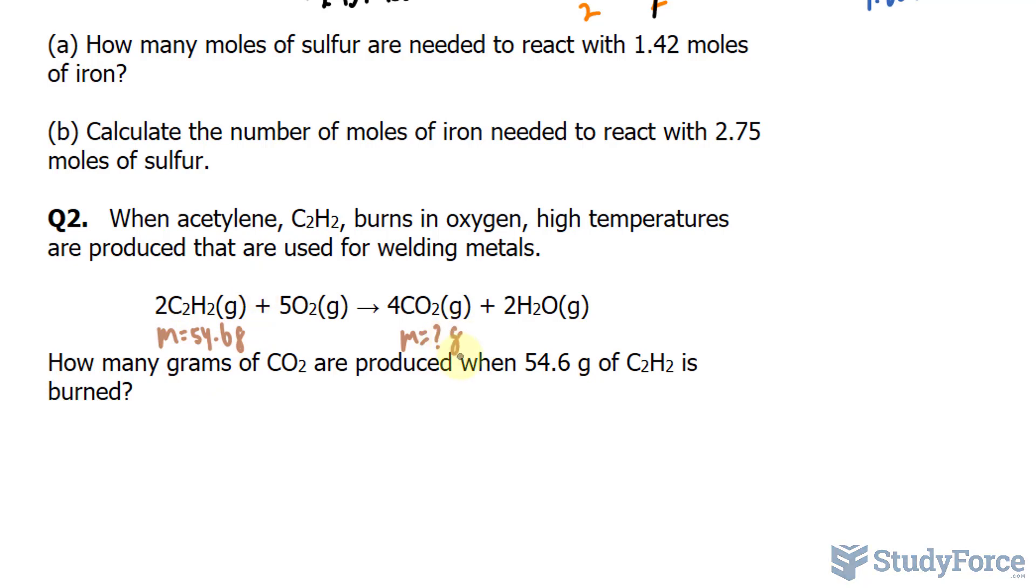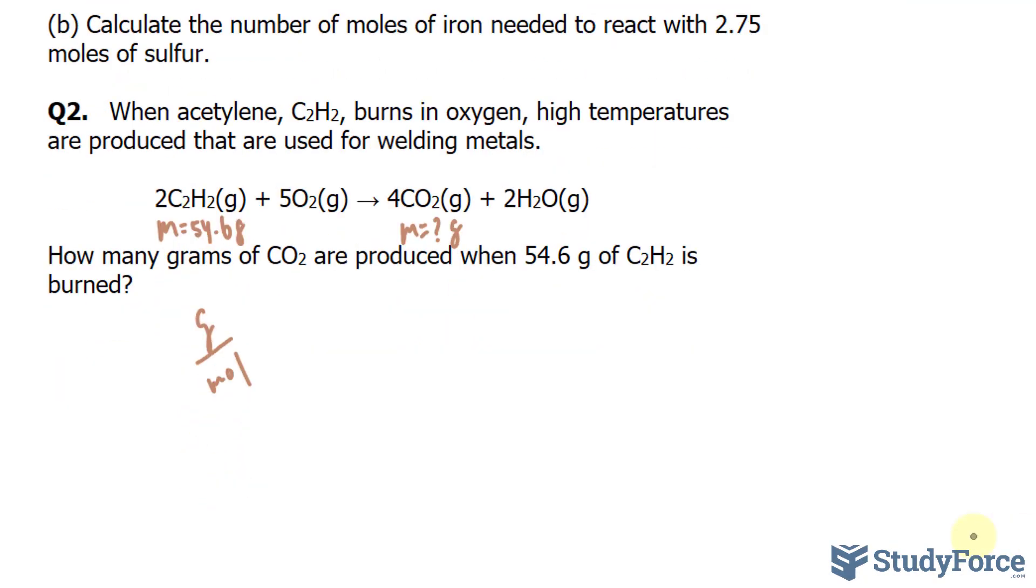What we'll need to do is find the amount of moles of this compound. And the way we can do that is first calculate the molar mass. And then using the molar mass and the mass, we can find the number of moles. Because remember, molar mass is grams per mole. To quickly find the molar mass of C2H2, the molar mass of individual carbon atoms is 12.01.